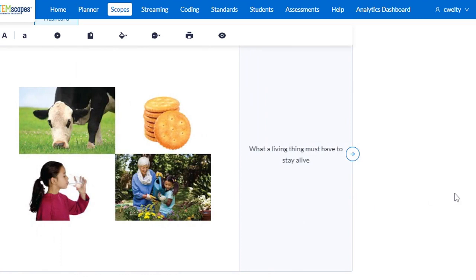Let's look at the next one. What a living thing must have to stay alive. What are these things called? Look at the different pictures. Pause for more time. The different things we need to stay alive are called our needs. We talked a lot about food, water, and shelter as some of our needs.